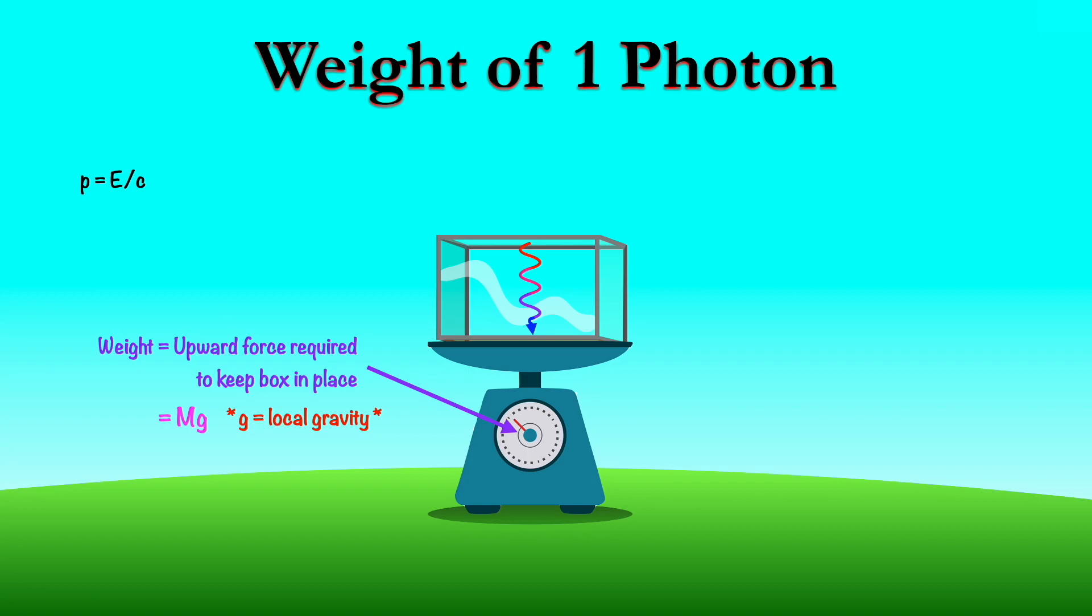This is essentially the same thing as if you throw a baseball up in the air. The baseball goes up, it slows down, so it loses energy. And when it comes back down, it speeds up, picking up energy again. Same thing with the photon. If it goes up in the gravitational field, it loses energy. When it comes down, it gains energy.